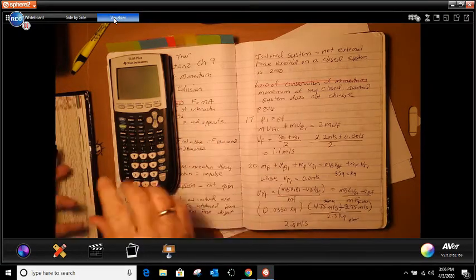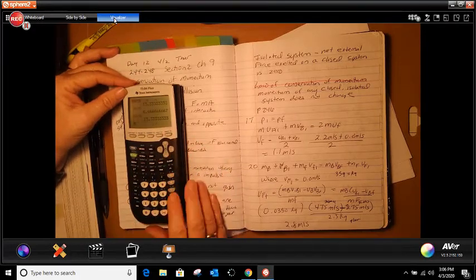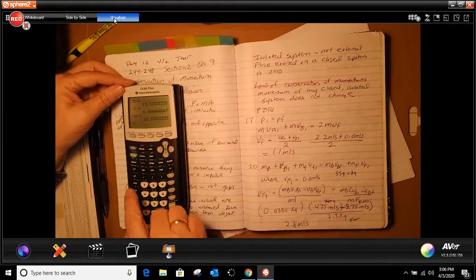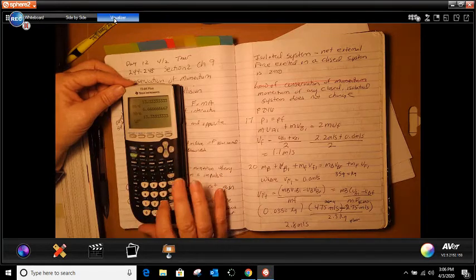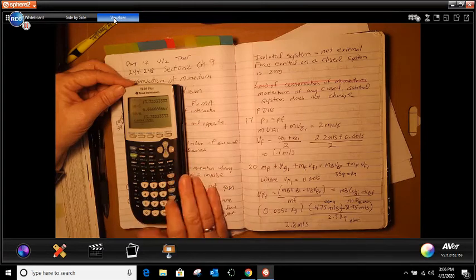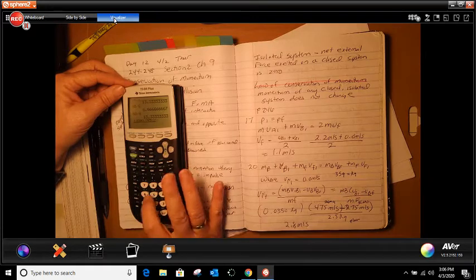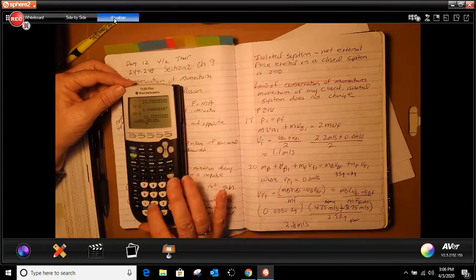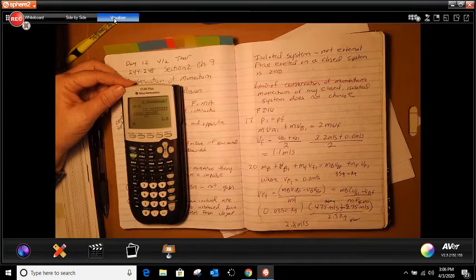So, in our calculator, first thing first, make sure our modes are good, we look good. So we're going to go and here we have a fraction. So we're going to do alpha y, enter. We're going to do open bracket 0.0350, close bracket, open bracket, 475, close bracket. And we're going to subtract 275, close bracket. Then we're going to go down here, 2.5 and we should get 2.8 meters per second.